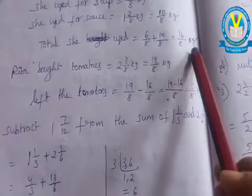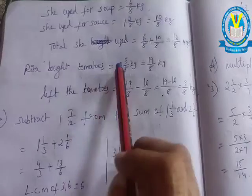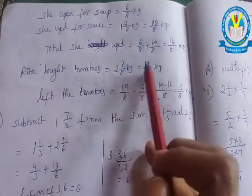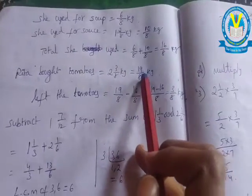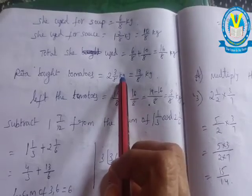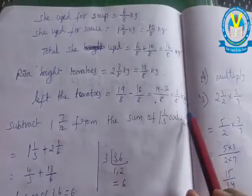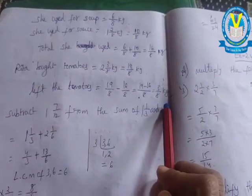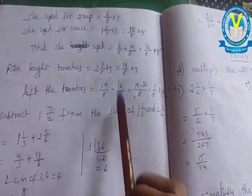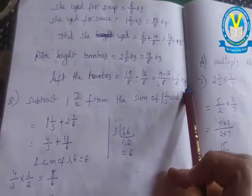She used sixteen by eight. Rita bought total two and three-eighths cases, which is nineteen by eight. To find how many tomatoes are left, subtract the tomatoes used from the total tomatoes. She bought nineteen by eight, she used sixteen by eight. Do the subtraction: three by eight cases. This is the answer.